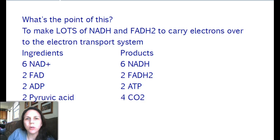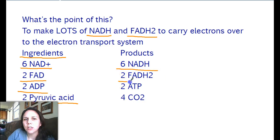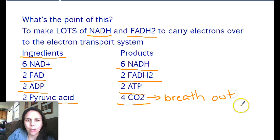So what is the point of the Krebs cycle? To make lots of NADH and FADH2 to carry electrons over to the electron transport system. What are the ingredients of the Krebs cycle? Well, you need six NAD+, two FADs, two ADPs, and two pyruvic acids. What do you get? Six NADH, two FADH2, two ATPs, and lots of carbon dioxide. Carbon dioxide is one of the main products of cellular respiration, which we just breathe out. ATP we can store that.